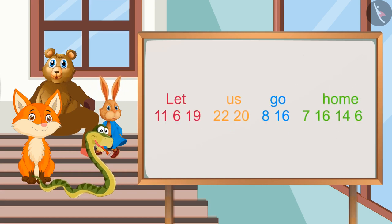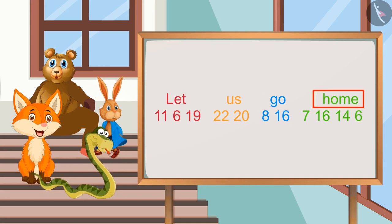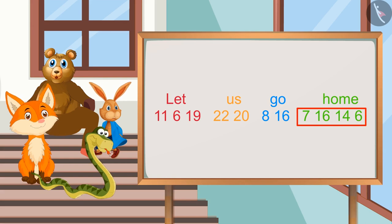Yes, this is the order of Bholu. Let will be 11, 6, and 19. Us will be 22, and 20. Go will be 8, and 16. Home will be 7, 16, 14, and 6.